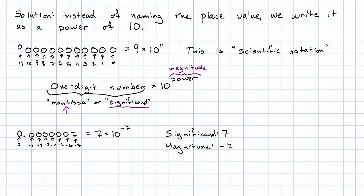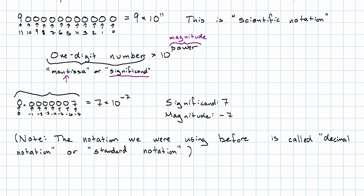You know, now that we have this term for scientific notation, we need to have a word for this notation that we've been using all along that wasn't scientific notation. The notation we were using before is called decimal notation or standard notation. Again, I like decimal notation better, but standard notation is a little bit more common. So I'm going to try to use standard notation here.